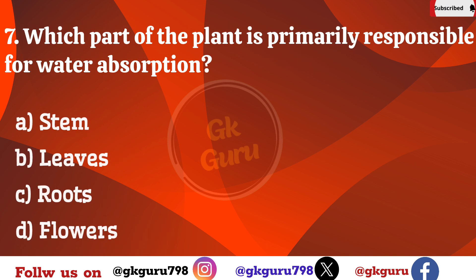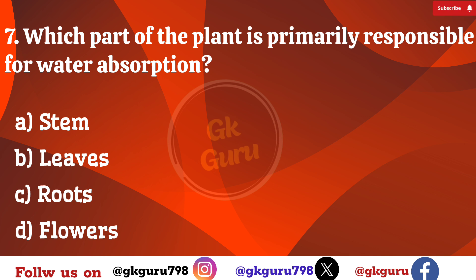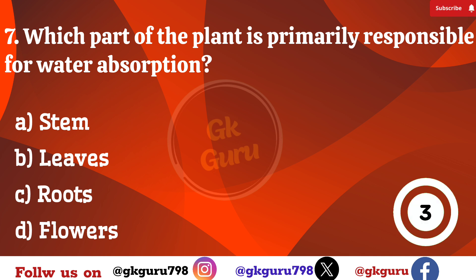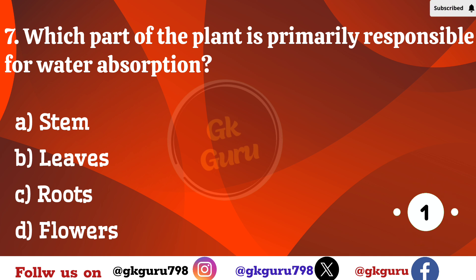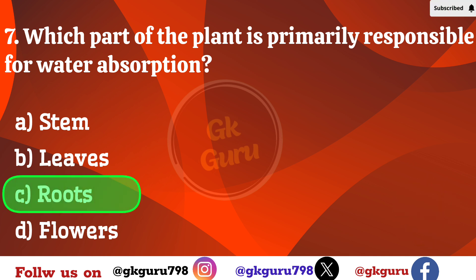Seventh question: Which part of the plant is primarily responsible for water absorption? Option A: stem. Option B: leaves. Option C: roots. Option D: flowers. Correct answer: Option C, roots.